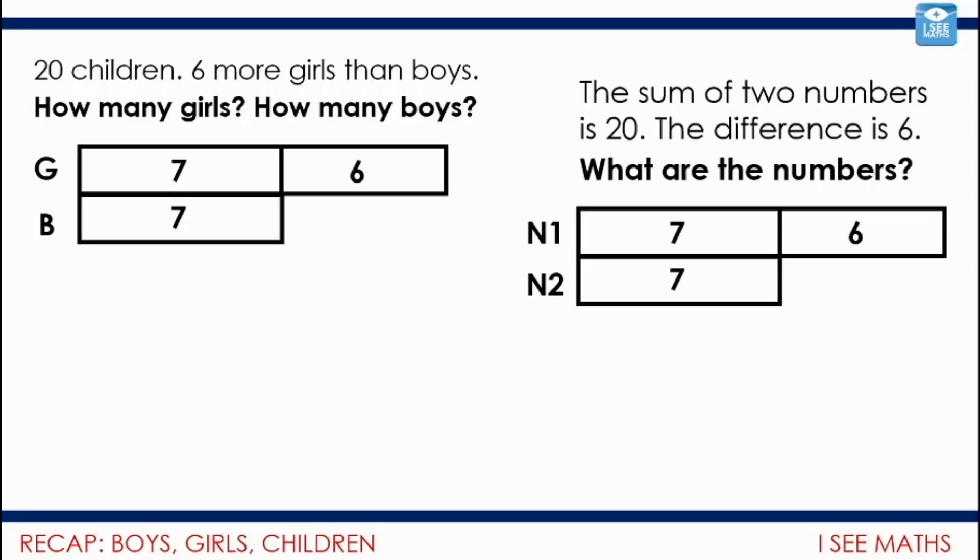Well have a look at this. Different question, different context. The sum of two numbers is 20. The difference is 6. What are the numbers? What would number one be? What would number two be? Well of course exactly the same bar model. Still a difference of 6. What will be left? Fourteen. Half that difference.